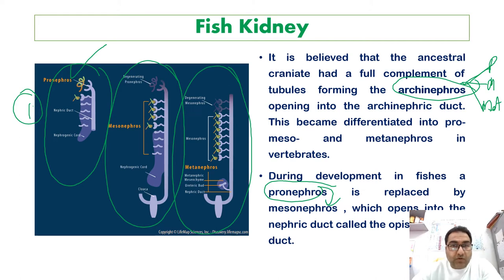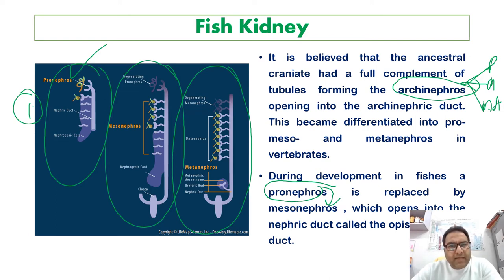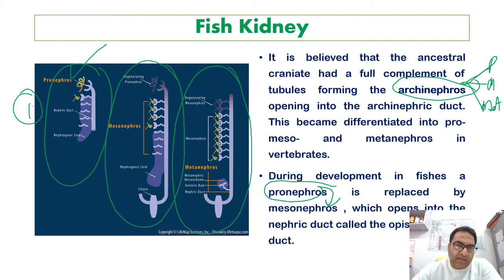The mesonephros develops by the formation of mesonephric tubules from the intermediate mesoderm. It is the principal excretory organ during embryonic life, approximately 4 to 8 weeks, and it gradually degenerates, although part of its duct system becomes associated with the male reproductive organ.